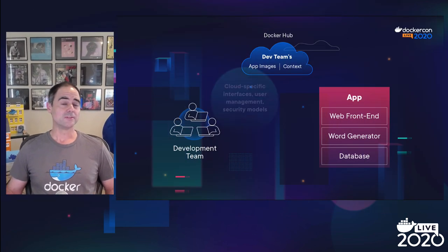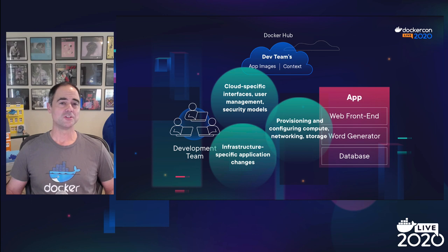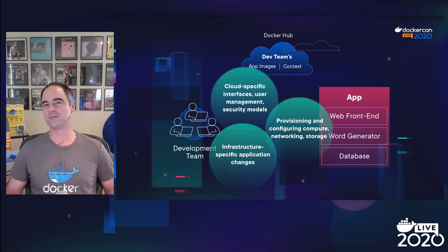In that sneak preview, you saw a team developing an app collaboratively with a toolchain that includes Docker Desktop and Docker Hub, and simply by switching Docker context from their local environment to the cloud, deploy that app to Azure without leaving the command line using Docker commands they already know. And what you did not see was a lot of complexity. You did not see cloud-specific interfaces, user management, or security. You did not see us having to provision and configure compute, networking, and storage resources in the cloud. And you did not see infrastructure-specific application changes to either the Compose file or the Docker images. By simplifying away that complexity, these new features help application development teams quickly iterate and get their apps from code to cloud. And helping development teams build, share, and run great applications is what Docker is all about.